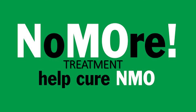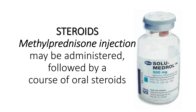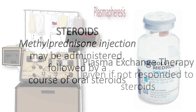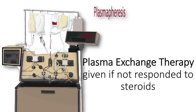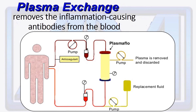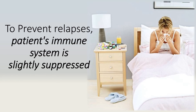Treatment: Steroids — Methylprednisolone injection may be administered, followed by a course of oral steroids. Plasma Exchange Therapy (Plasmapheresis) is given if the patient has not responded to steroids; plasma exchange removes the inflammation-causing antibodies from the blood. To prevent relapses, the patient's immune system is slightly suppressed.